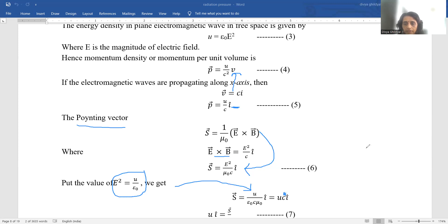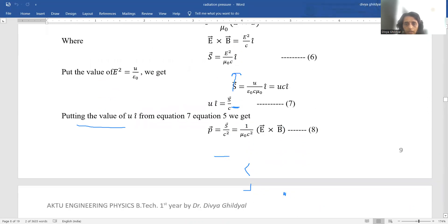and these terms 1 upon mu naught epsilon naught give you the velocity of light c. So now this becomes equal to ui is equal to s upon c here the x component.